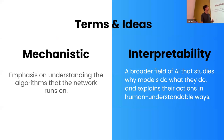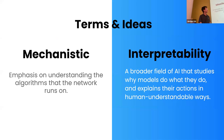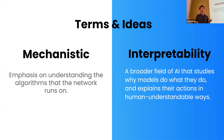Mechanistic interpretability: 'mechanistic' means we emphasize understanding the algorithms the network runs on. 'Interpretability' is a broader AI field that studies why models do what they do and explains their actions in human-understandable ways. The field of interpretability is actually much broader than mechanistic interpretability, which aims to examine the tiniest structural elements.